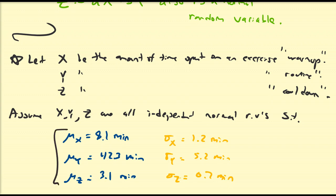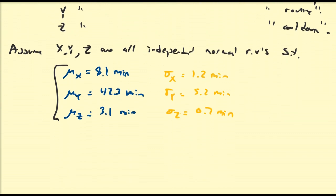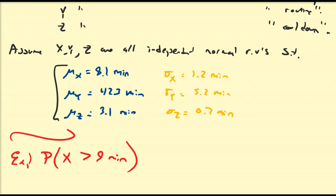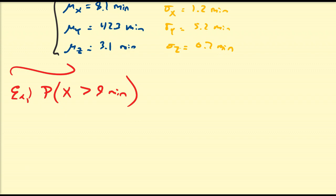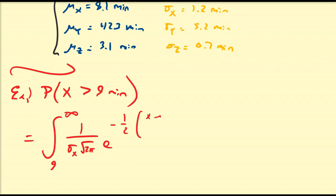You should already be familiar with how to solve some basic probability problems associated to a single variable. For example, what is the probability that a randomly selected person from this population has an amount of time spent on an exercise warm-up longer than 9 minutes? We can find this area by integrating from 9 to infinity of 1 divided by sigma_x times the square root of 2π, times e to the minus one-half of (x minus mu_x) over sigma_x, all squared, dx. Once you work out this integral numerically, this probability is approximately equal to 0.2266.